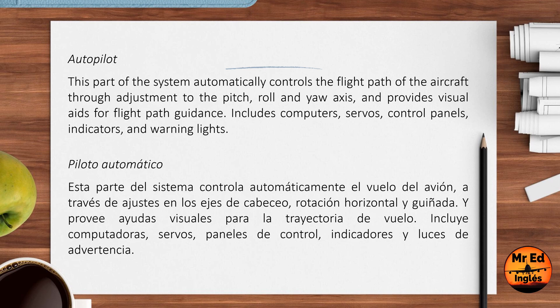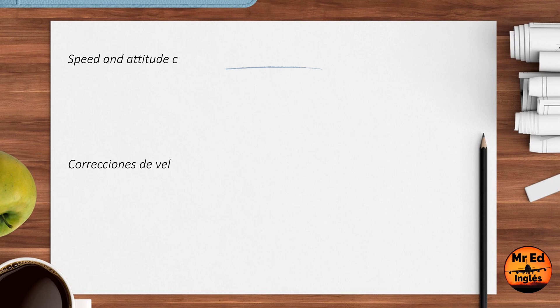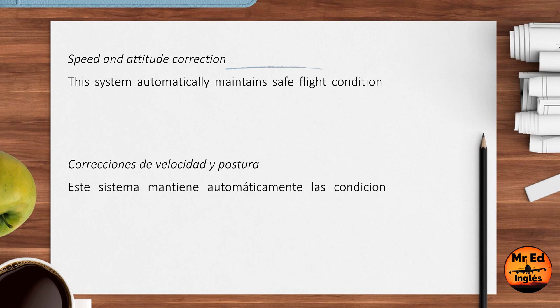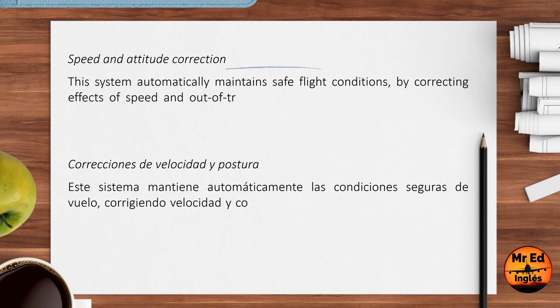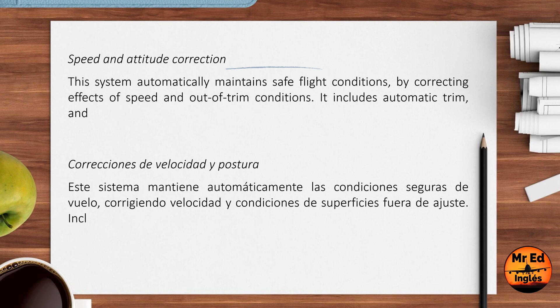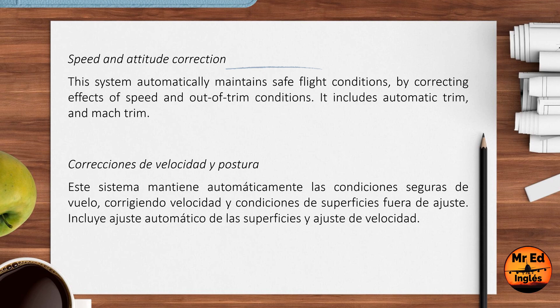The autopilot system includes computers, servos, control panels, indicators and warning lights. Speed and Attitude Correction: this system automatically maintains safe flight conditions by correcting effects of speed and out-of-trim conditions.